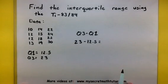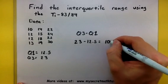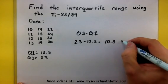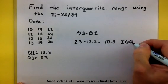So we're going to take 23 minus 12.5. This will give us an answer of 10.5. And sure enough, that is the interquartile range.